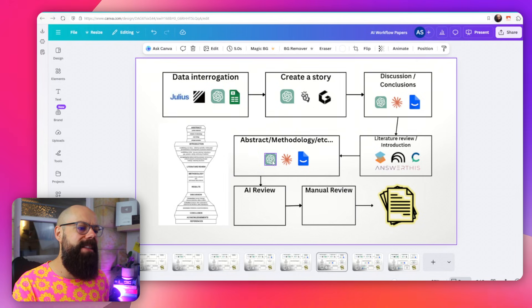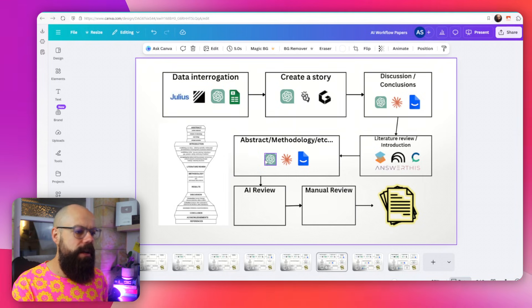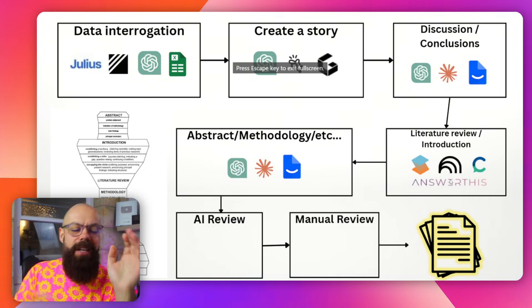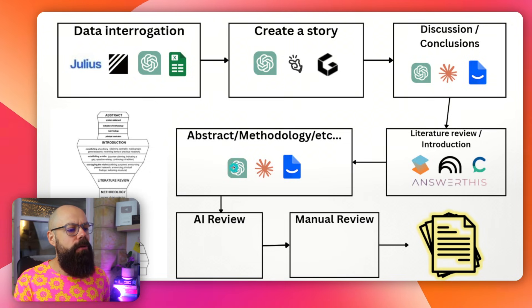You can do something similar with ChatGPT or Claude. When using them, I would put in examples of abstracts that you like in the field and the journal you're submitting to. Say: here are three abstracts in this field — write an abstract based on my paper using the same structure or template. You're providing it with best-case structures so it can build out your version.